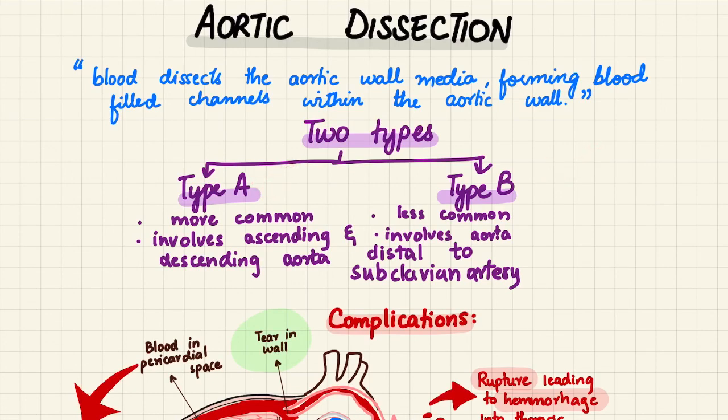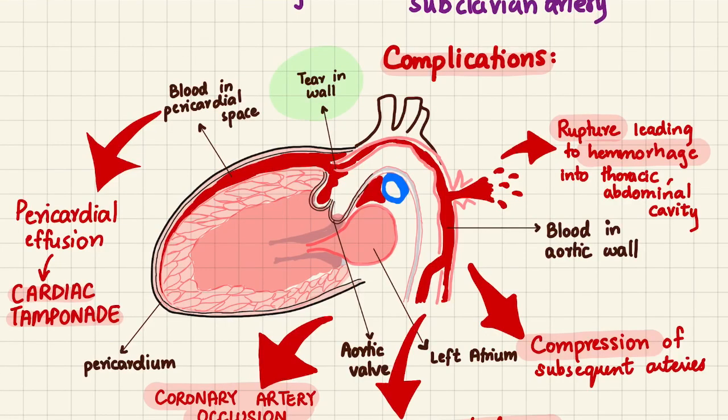Type A is the more common type and involves the ascending and descending aorta, while type B is less common and involves the aorta distal to the subclavian artery. There are many complications of an aortic dissection.